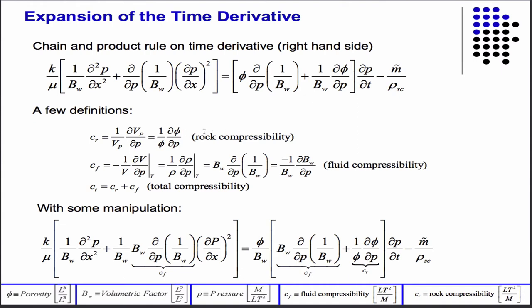And then we'll just pull, add in—essentially we're just multiplying by one. We have like b_w over b_w, but we pull one of the b_w's inside, and then you have something that looks like the fluid compressibility. And so then you make those substitutions in. The total compressibility is the sum of the fluid compressibility and the rock compressibility. So then we just make these substitutions in.